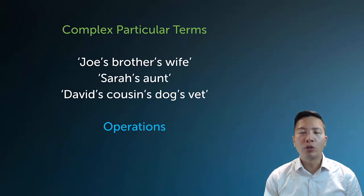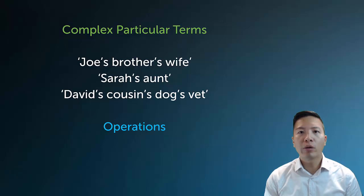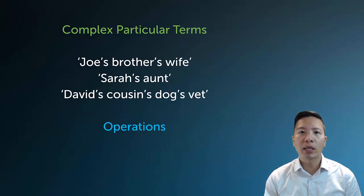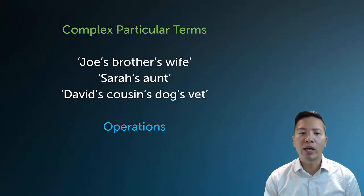What we often use in English are called complex particular terms. Complex particular terms allow us to name a particular individual without actually invoking or using the name itself. We often use this when it's more informative to give a relational name, or sometimes we just don't know the name at all. So I can say 'Joe's brother's wife,' 'Sarah's aunt,' or 'David's cousin's dog's vet.' In order to capture this logically, we use operations.